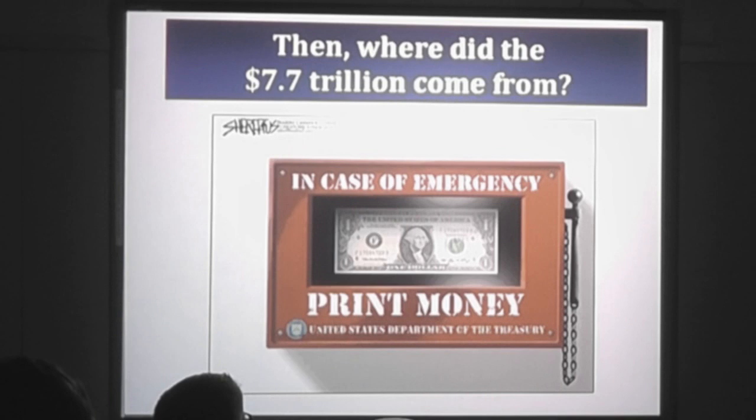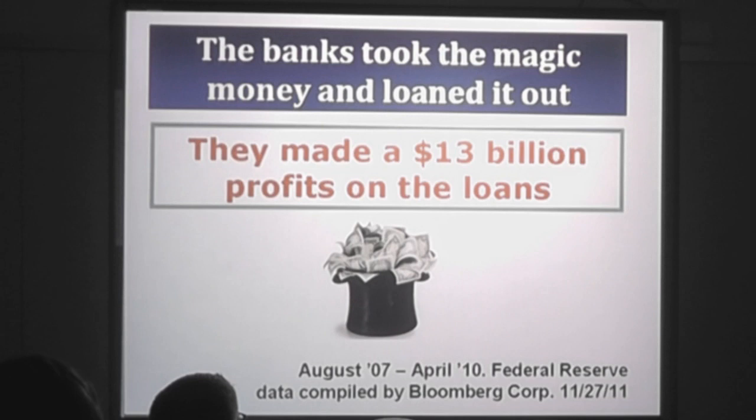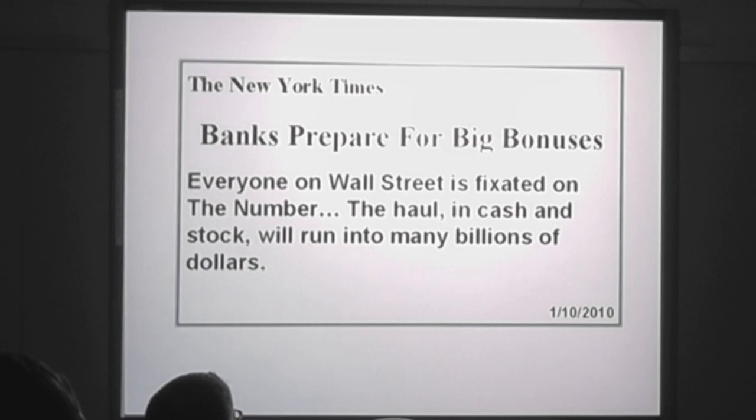The banks that the Fed gave the money to then loaned it out themselves and made, according to Bloomberg, $13 billion in profits loaning out the non-existent money that the Fed had created for them. Then we find this in the Times: 'Banks prepare for big bonuses. Everyone on Wall Street fixated on the number — all in cash and stock will run into billions of dollars.'